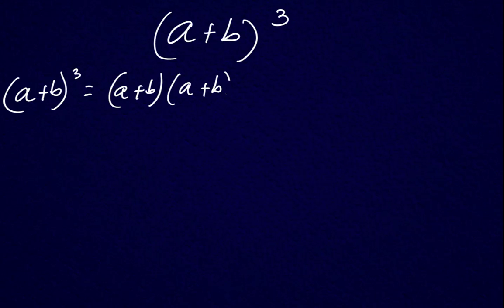Since we've already seen a plus b squared, we'll write the formula: a plus b times a squared plus 2ab plus b squared.